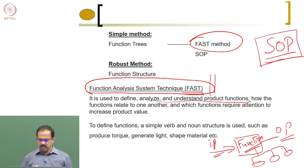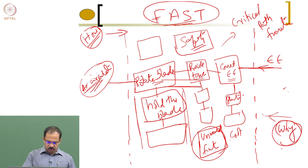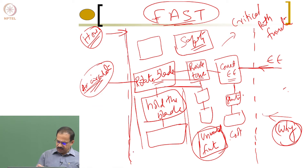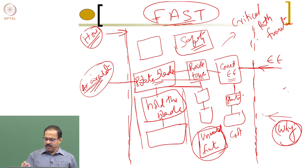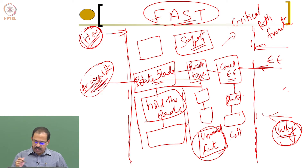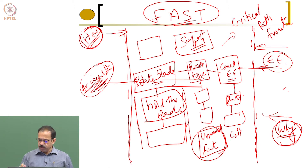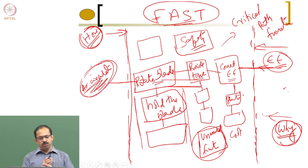In the FAST method, we draw two boundary lines and ask questions: how is it done or why is it done. We write the inputs on the right side — for example, electrical energy — and on the left side we write the output, which is air circulation for a fan.